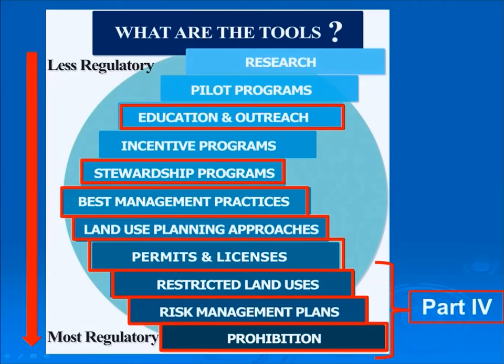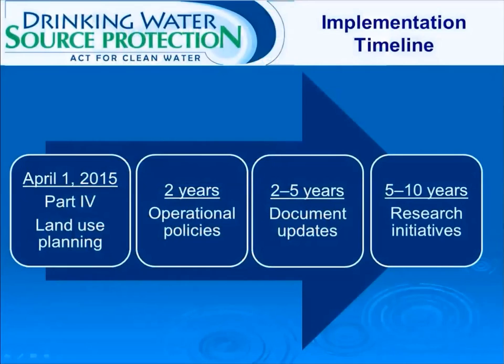Policies in the Cataraqui Source Protection Plan include implementation deadlines. These range from immediately following the April 1, 2015 effective date to up to 10 years following the effective date. Both Part 4 and land use planning policies are immediately effective on April 1, 2015.